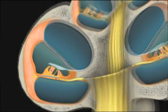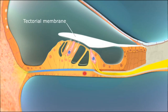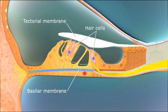The scala media includes structures from the tectorial membrane, basilar membrane, and hair cells, which sense the mechanical forces.